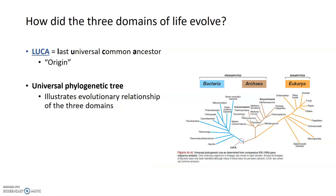Microorganisms can exist in all three domains of life, and all of life came from a single point or single common ancestor, which you can see here on this universal phylogenetic tree labeled LUCA. LUCA stands for the Last Universal Common Ancestor — the last common ancestor for all of these different domains, sometimes also called the origin.